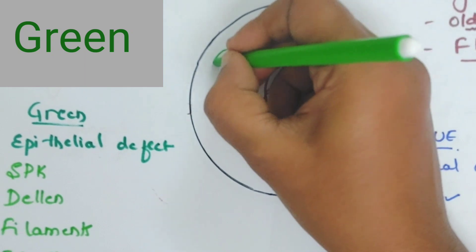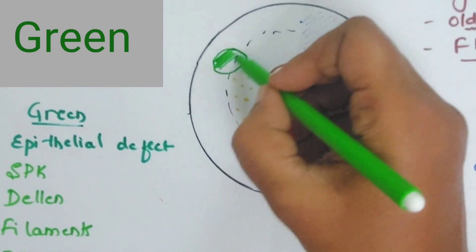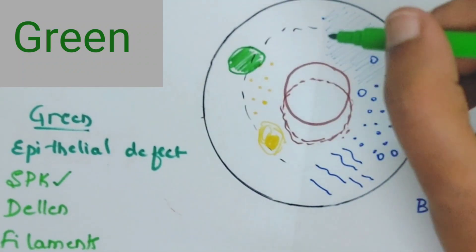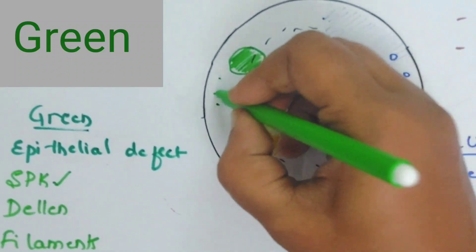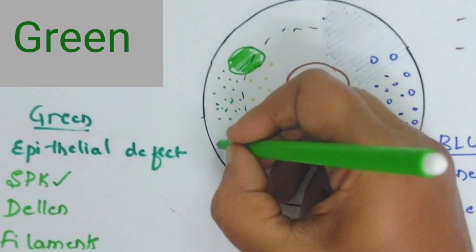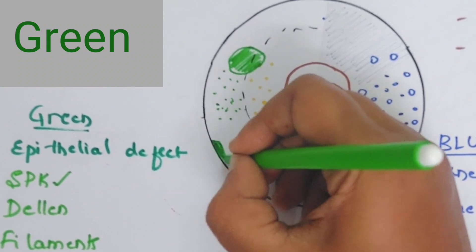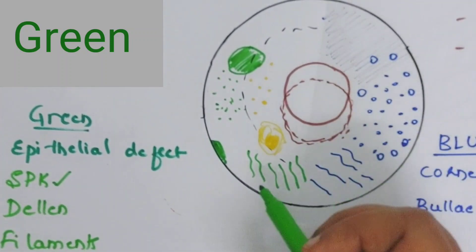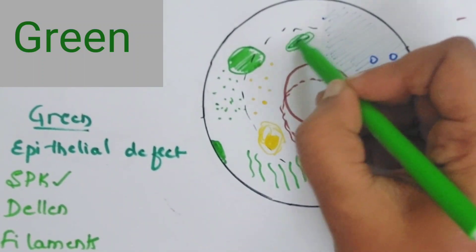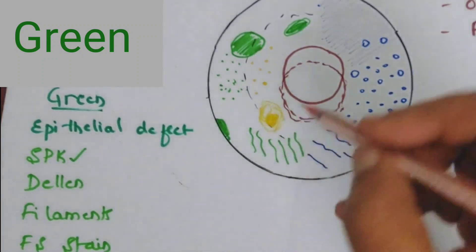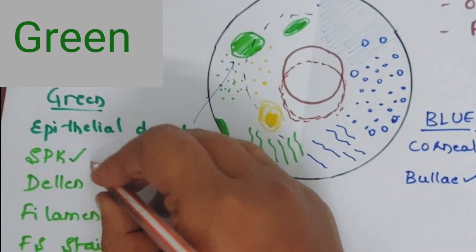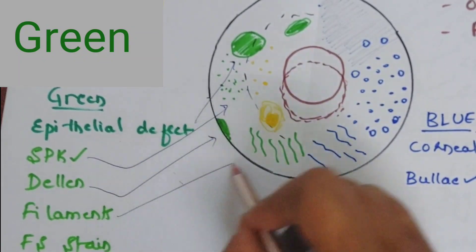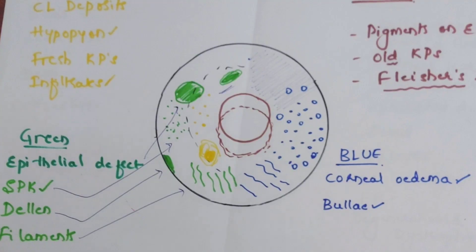Green color is used to show the epithelial defect — shade the defect area in green. It is also used for superficial punctate keratitis (SPK), which is shown as multiple small green markings. Dellen — a superficial defect in the cornea — is shown in green. Filaments seen in dry eyes are shown in green. Fluorescein (FS) staining of any part of the cornea is also represented in green. So green represents: epithelial defect, SPK, dellen, filaments, and FS staining.